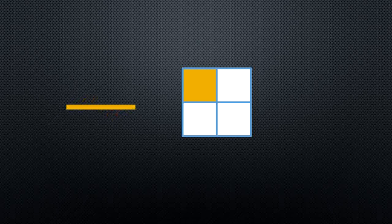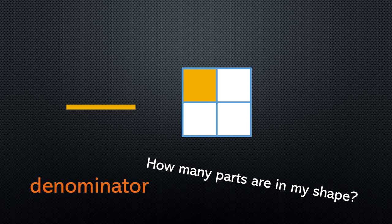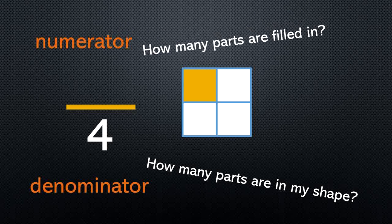Here's our next shape. Only one part is filled in here. Let's see how we're going to fill out this fraction. Remember, bottom is denominator — how many parts are in my shape? Count with me: one, two, three, four. Four goes on bottom because there are four parts in the shape. Now, numerator — how many parts are filled in? Just one. The way we read this fraction is one-fourth. There is one part filled in, but the shape is divided into fourths, so I'm showing one-fourth of this square being colored in.